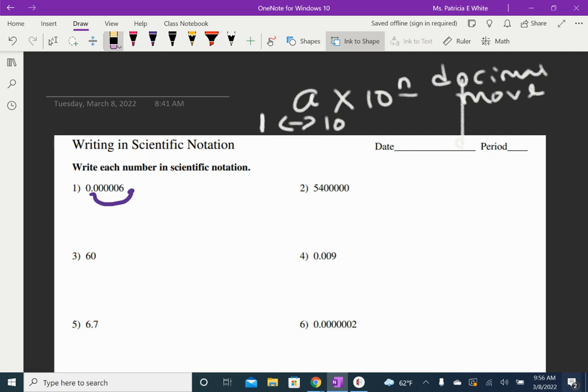I'm going to say 6 times 10. How many spaces did I move? 2, 3, 4, 5, 6. So since that's a very, very tiny number, it's going to be 6 times 10 to the negative 6. Small numbers have negative exponents, large numbers have positives.